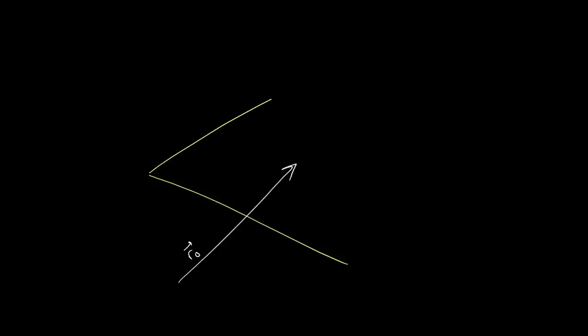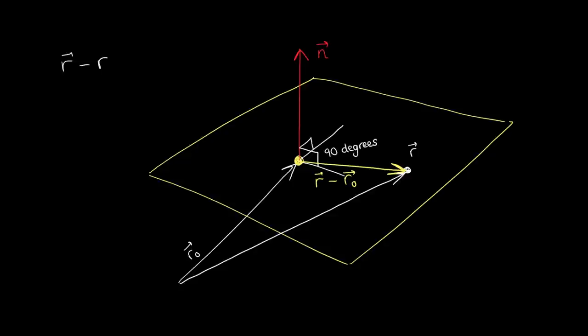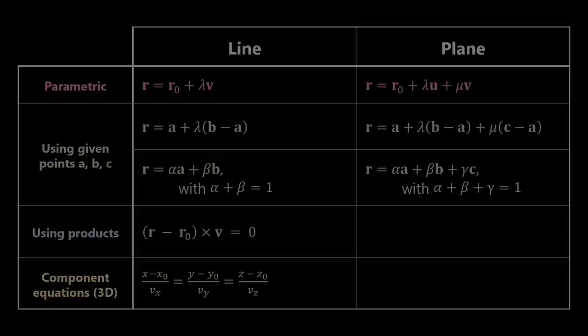Now let's look at an equation for planes using products. Let's consider a plane in space with a certain vector r0, and instead of defining two vectors u and v contained in the plane, we can define a vector that is perpendicular to the plane — this is called the normal vector. Any vector contained in this plane, which we can write as r minus r0, will be perpendicular to this normal vector. Therefore, their dot product will be zero. This is a very common equation for a plane, showing that a plane can be completely defined if we are given a point and a normal vector.